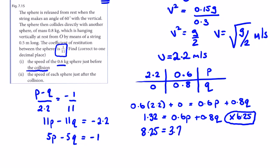Adding these two lines, I get 7.25 equals 8.75p, giving me a value for p.